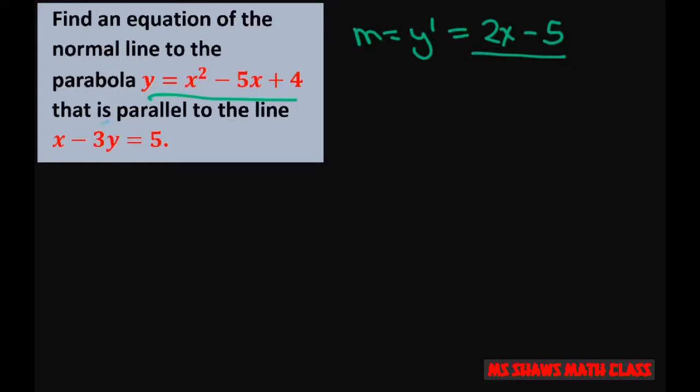And then it's parallel to this line. So, let's find the slope of this line. If I rewrite this, I'm going to get y equals 1 third x minus 5 thirds. So, the slope is 1 third.